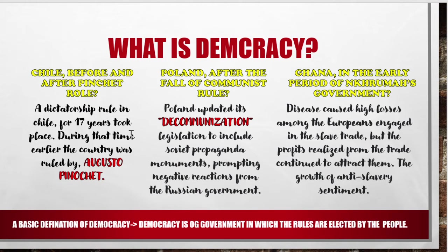We have three case studies. The first is Chile before and after Pinochet's rule. Dictatorship rule in Chile lasted for 17 years. Dictatorship means the person who is ruling the country is not listening to anyone — ruling the country in whatever way they want, and no one is capable of even telling them they are not doing right. That is monarchy — one-man rule or one-person rule. The leader in a monarchy is called the dictator, and it establishes dictatorship in the country.